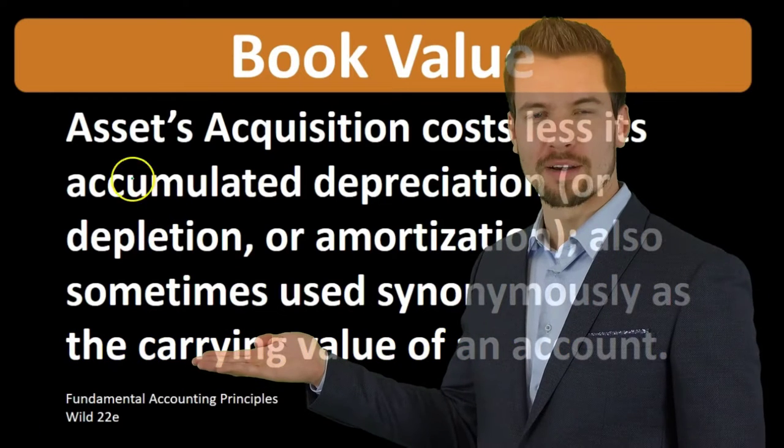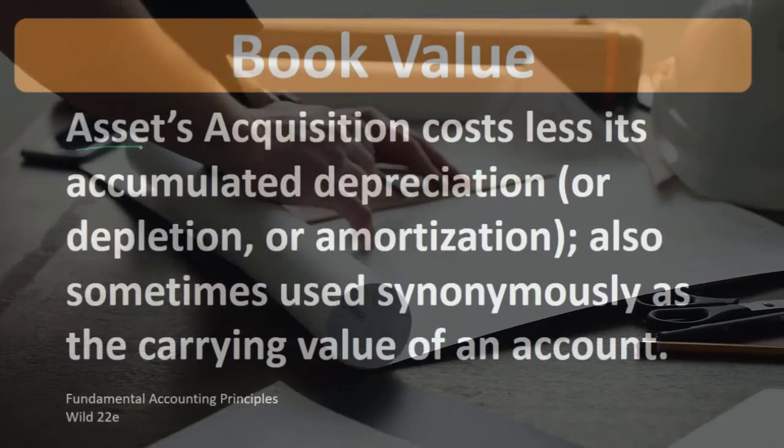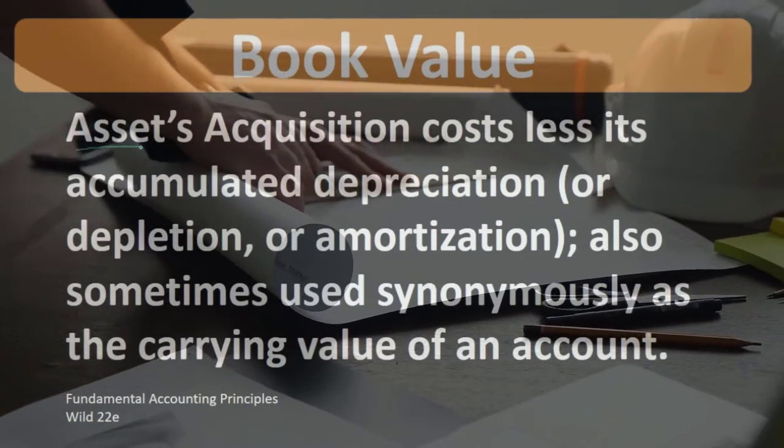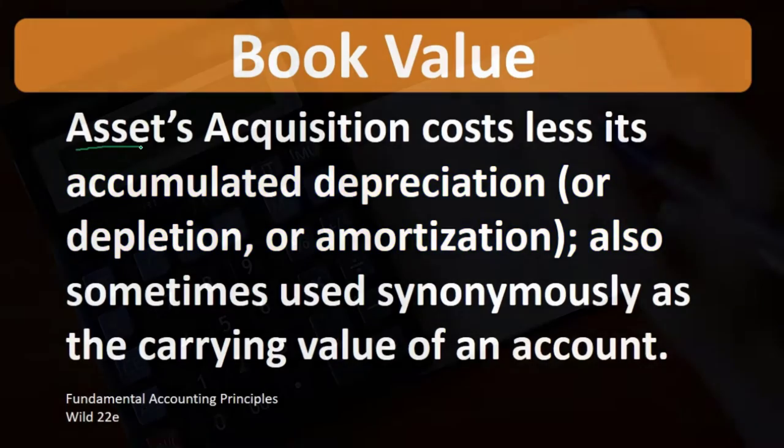A couple key points about this definition: we're generally talking about assets when thinking about book value, more specifically property, plant, and equipment or intangible assets that will have depreciation, depletion, or amortization over time.